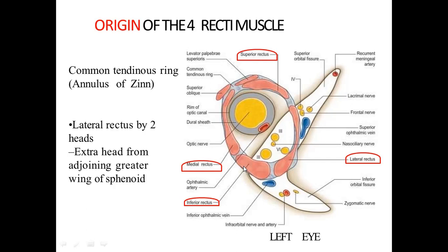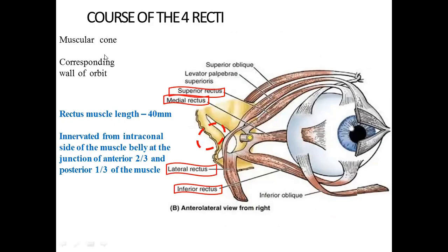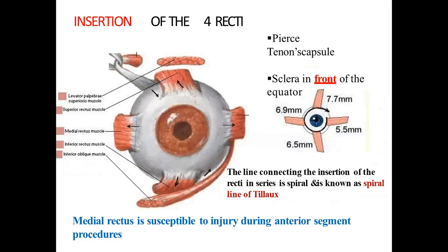The lateral rectus arises by two heads, with an extra head from the adjoining greater wing of the sphenoid. The four recti muscles — superior, medial, lateral, and inferior rectus — take origin from the common tendinous ring (annulus of Zinn). In their course they form a muscular cone. Each rectus muscle is about 40 mm long, innervated from the intraconal side at the junction of the anterior two-thirds and posterior one-third of the muscle belly. They insert on the sclera in front of the equator.